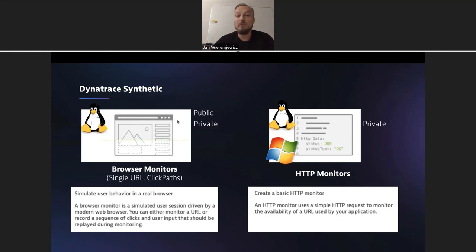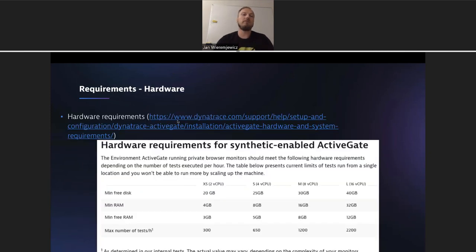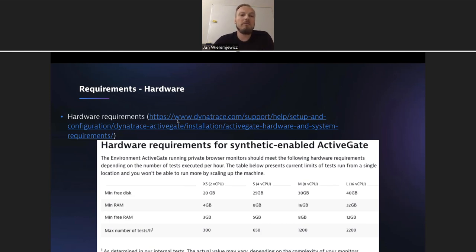The new option for private is what we just added. This presentation covers how to install it and what to expect. It's currently available only for Linux, but Windows support is coming this summer. First, you need to fulfill the hardware requirements — our estimations are based on performance testing, though no two tests are the same; they'll differ depending on the complexity of the web page and the monitor itself. A monitor can have many different steps or actions. You install a synthetically-enabled ActiveGate to create a private location, as before for HTTP, but now also for browsers.